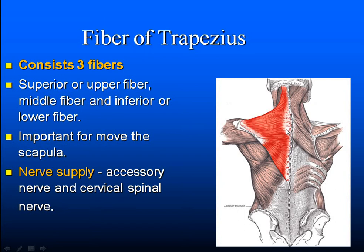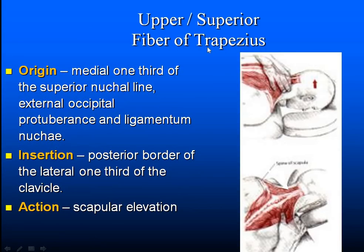The upper trapezius fibers originate from the medial one-third of the superior nuchal line, the external occipital protuberance, and the ligamentum nuchae — a broad aponeurotic ligament covering the cervical muscles (the cervical equivalent of the thoracolumbar fascia, which covers the lumbar and thoracic areas and is divided into three layers: posterior, middle, and anterior). The upper trapezius inserts onto the posterior border of the lateral one-third of the clavicle. Its main function is shoulder shrugging — scapular elevation.